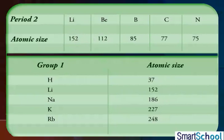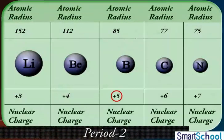Atomic radius decreases in moving from left to right along a period. This is due to an increase in effective nuclear charge which tends to pull the electrons closer to the nucleus and reduces the size of the atom.